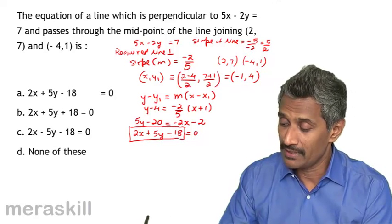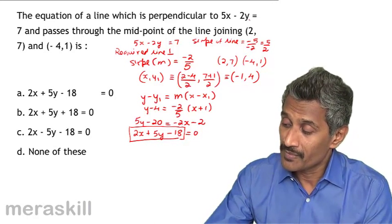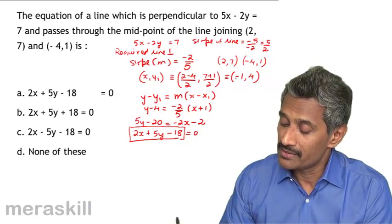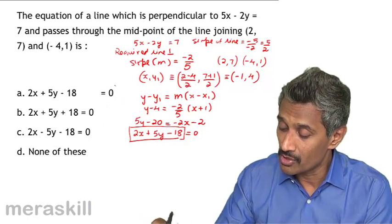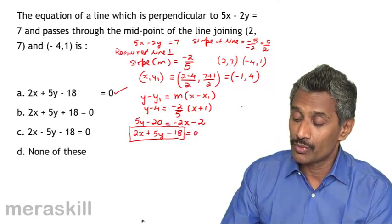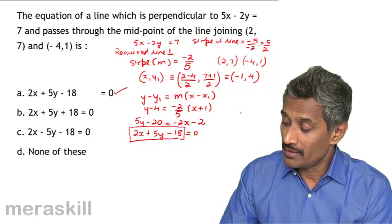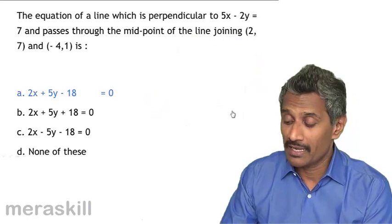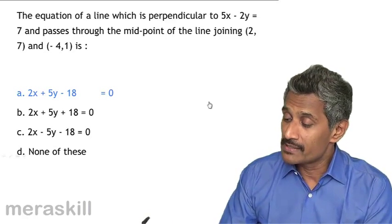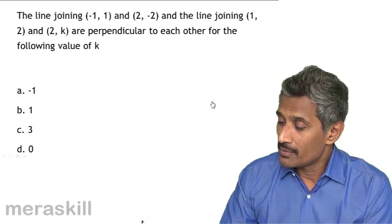So 2x plus 5y minus 18 equals 0 is the equation of the line perpendicular to the given line and passing through the midpoint of the two given points. Among the options, the answer is option B: 2x plus 5y minus 18 equals 0.